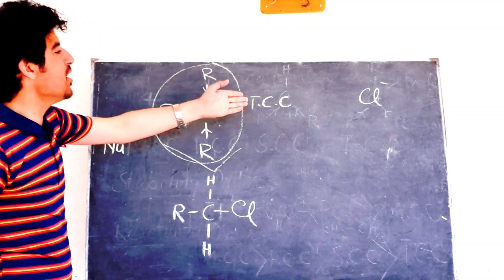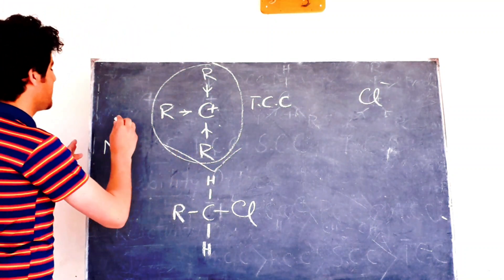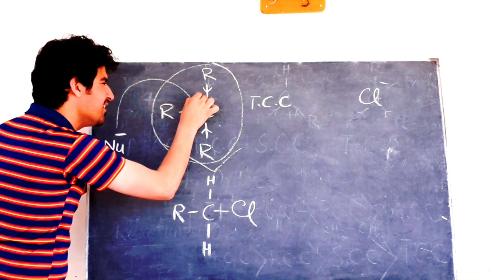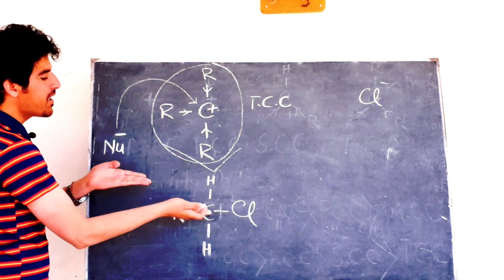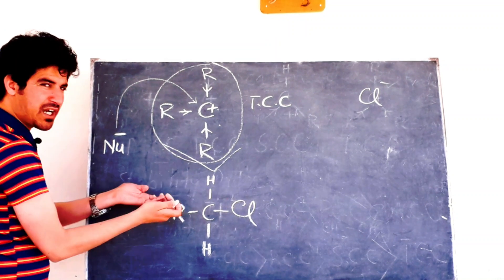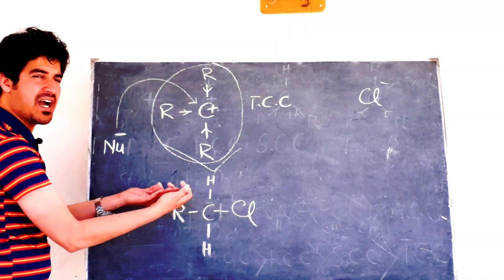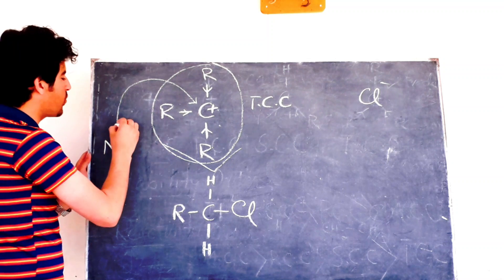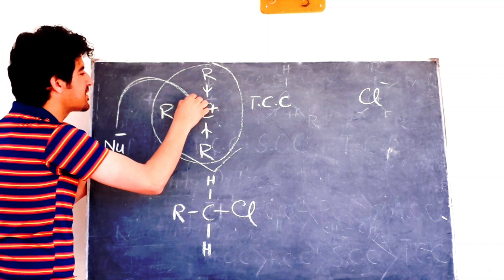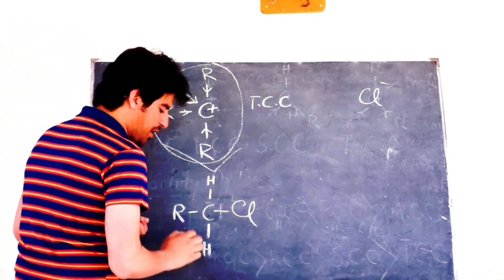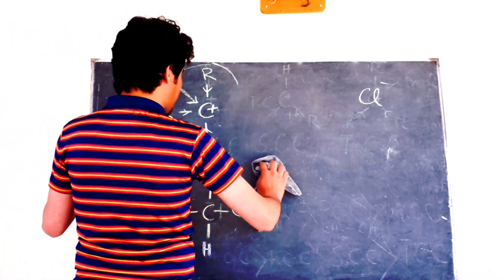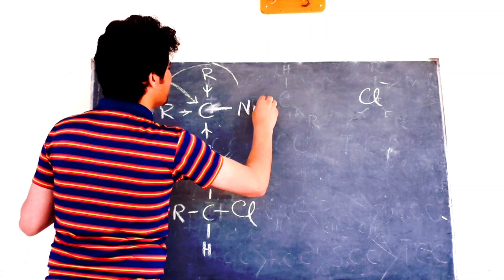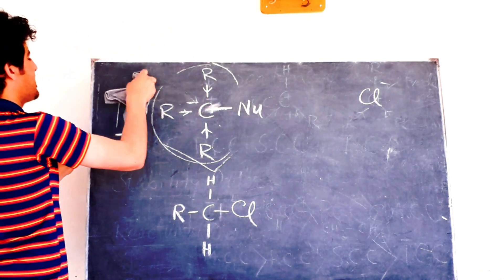Since the tertiary carbocation is stable and chloride has left, a nucleophile will attack from the side. The nucleophile attacks the tertiary carbocation and forms a product. Chloride leaves and the nucleophile attaches — this is how a new product is formed from the tertiary alkyl halide.